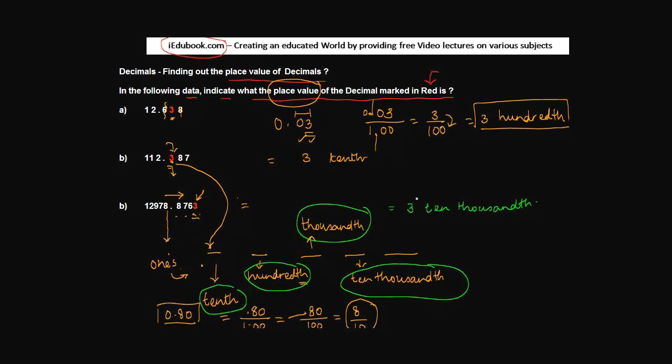In all these cases, I have used the number 3. You can write it as 3, 10,000, 3, 100, 3, tenth. So that's how you basically find out the place value of decimals.